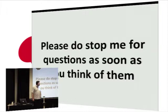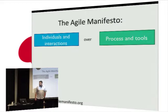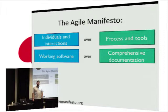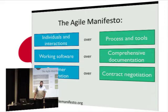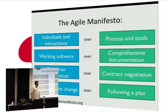Please stop me for any questions as we go through. First, look at the Agile manifesto. You value individuals and interactions over processes and tools — it's more about talking than planning. Working software over comprehensive documentation, which is quite popular with developers.